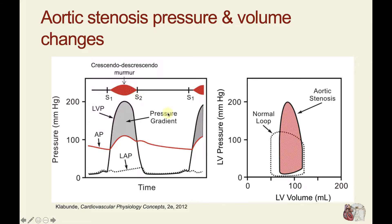How might this look with pressure-volume loops? Over here on the right, in the dotted loop, is the normal pressure-volume loop. The loop for aortic valve stenosis looks different: when the ventricle contracts and ejects blood, it has to generate a much higher pressure — to be consistent with this graph, 200 millimeters of mercury is the peak systolic pressure. Then that pressure starts to fall, followed by isovolumetric relaxation and filling. Notice that the filling curve for the ventricle is much steeper.